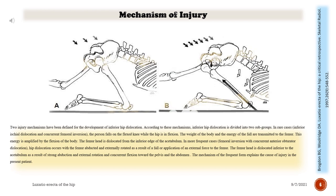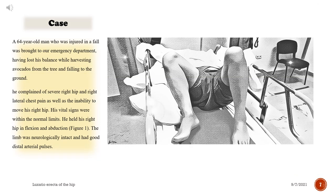The mechanism of the more frequent form explains the cause of injury in the present patient. A 64-year-old man who was injured in a fall was brought to our emergency department, having lost his balance while harvesting avocados from a tree. He complained of severe right hip and right lateral chest pain, as well as the inability to move his right hip.